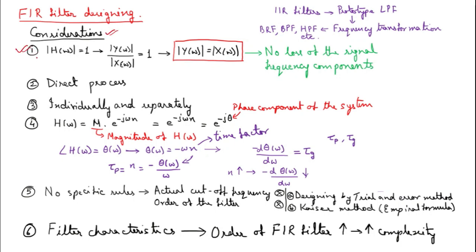The first consideration: the modulus of H of omega equals 1. That means the amplitude response of the filter in the passband has a gain of 1. We have discussed previously that modulus of H of omega is modulus of Y of omega divided by modulus of X of omega, which equals 1. Taking X of omega to the right-hand side, we get modulus of Y of omega equals modulus of X of omega in the passband.